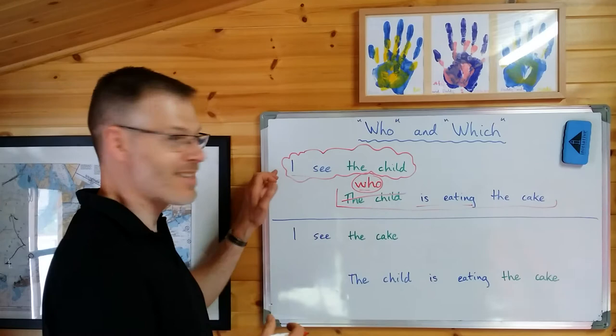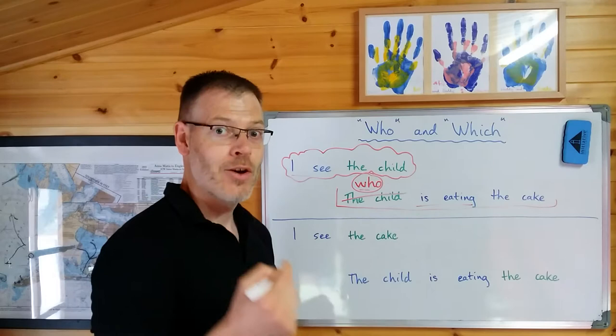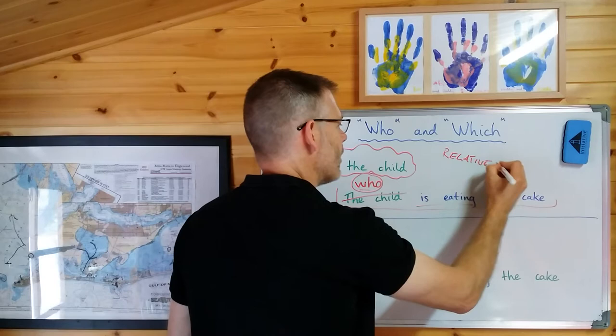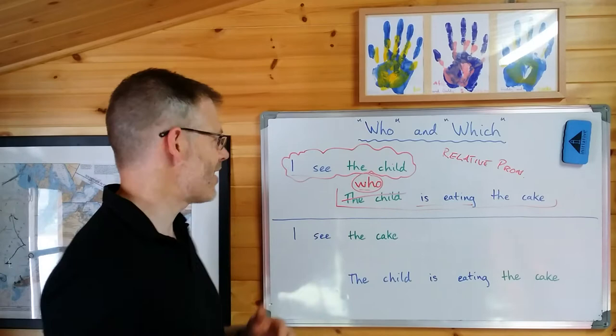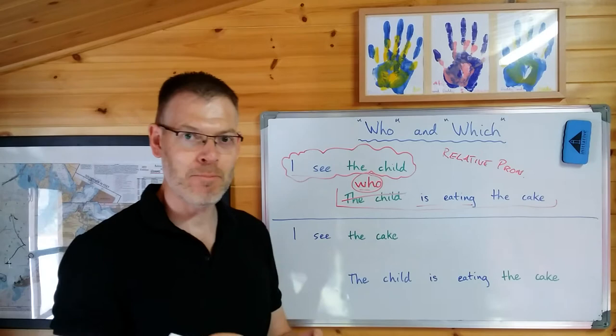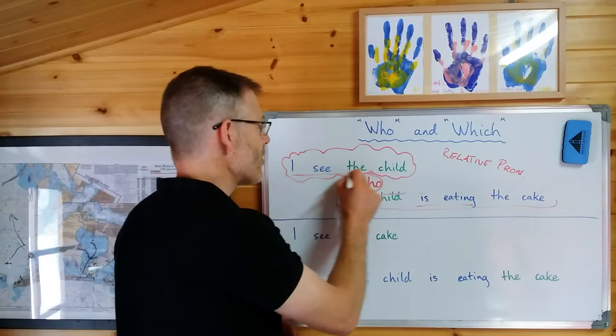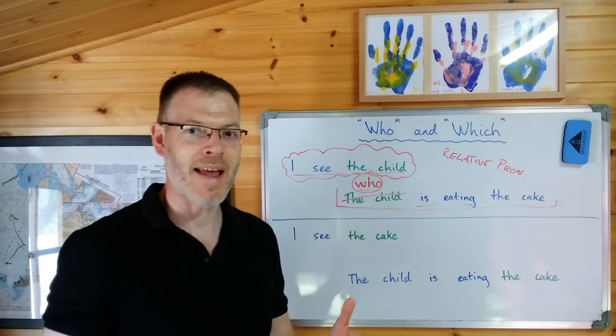How do we join them together? Very, very simple. We join them together with the word 'who,' and 'who' is an example of a relative pronoun. Let me say all that again just in a slightly different way. We started with two separate sentences: 'I see the child' and 'The child is eating the cake.' We join them together using a relative pronoun into a single complex sentence, which consists of a main clause — 'I see the child,' also known as an independent clause — and a subordinate clause — 'who is eating the cake,' also known as a dependent clause. This is one way of making a complex sentence.